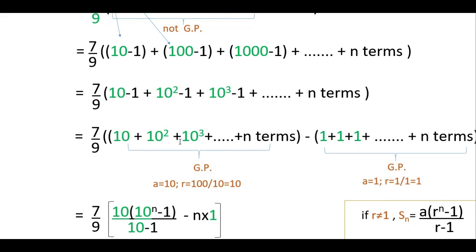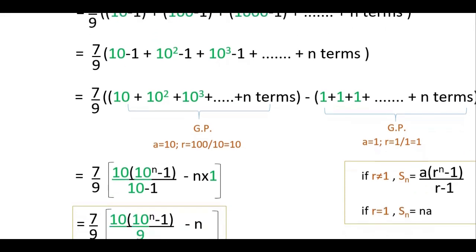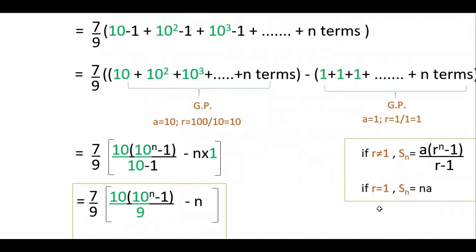For the first GP: A is 10 and R is 10. For the second GP: A is 1 and R is 1. We know that if R equals 1, the sum is n times A. If R is not equal to 1, the sum is A times (R to the power n minus 1) divided by (R minus 1). Substituting: for the first GP, A is 10, so it is 10 into (10 to the power n minus 1) divided by (10 minus 1), that is divided by 9.